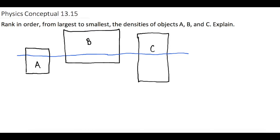If you were to take an air mattress, fill it up with air, and throw it on a pool, obviously it's going to float. And if you try to pull it under the water, it's going to be really hard. Why? It's not because of the weight of it — it could be really heavy. But since it's so full of air, the density of it is lighter than water, and it'll float.